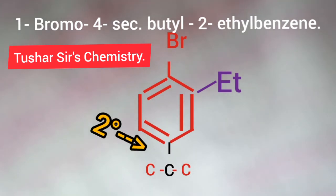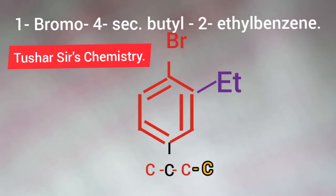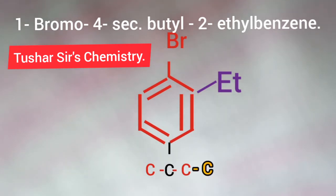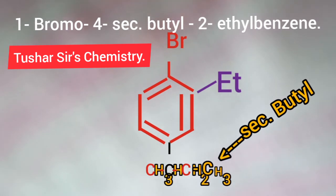In Butyl, there are four carbon atoms. So another one carbon is connected on either side of the carbon chain. Now this group becomes Sec-Butyl. Then hydrogen atoms are written along with carbon atoms: CH3, CH, CH2, CH3. Thank you.